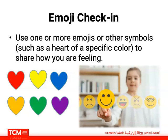Another strategy is the emoji check-in. Here you use one or more emojis or symbols — like a heart of a specific color — to share how you're feeling. You should define the emojis with specific vocabulary or a range of vocabulary words to have students accurately name their emotions. You can use color as a scale — for example, red is feeling great, orange is feeling really good, yellow is feeling good. You can assign whichever feelings to whichever colors makes most sense to you. You can add words and phrases that depict a variety of emotions for a particular emoji.